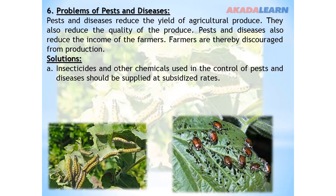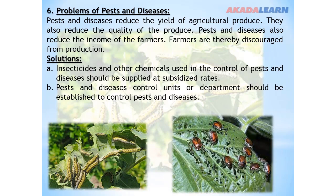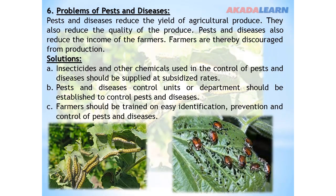Solution to these problems: Insecticides and other chemicals used in the control of pests and diseases should be supplied at subsidized rates to the farmers. Pests and diseases control units or departments should be established. Farmers should be trained on easy identification, prevention, and control of pests and diseases.